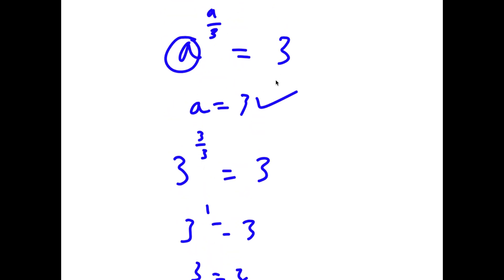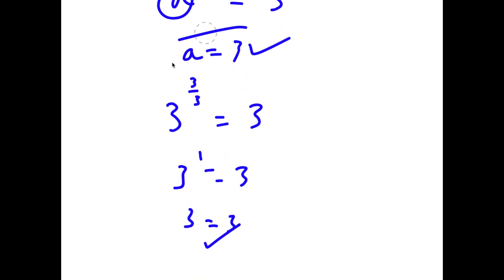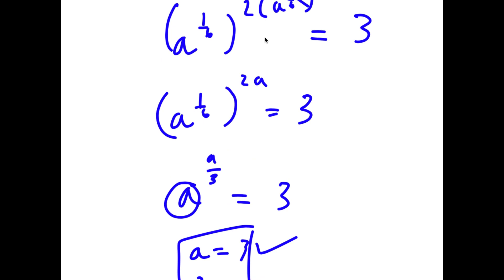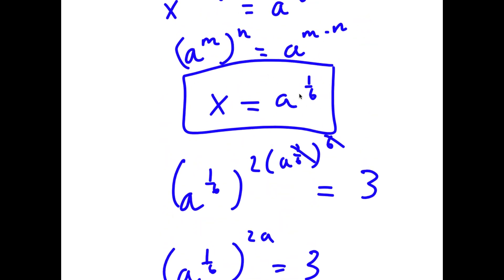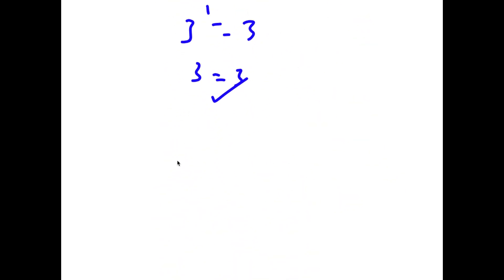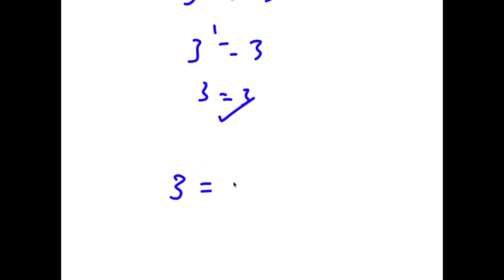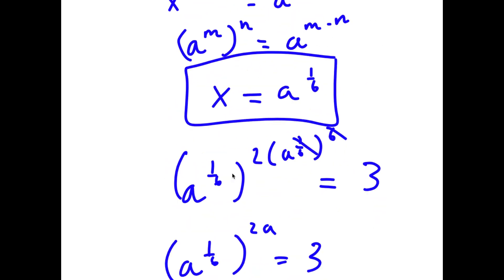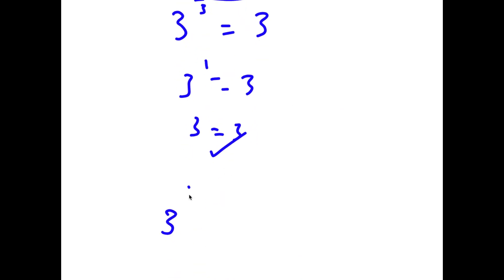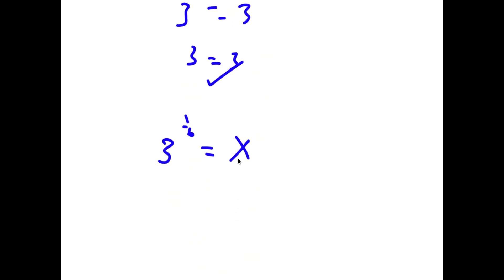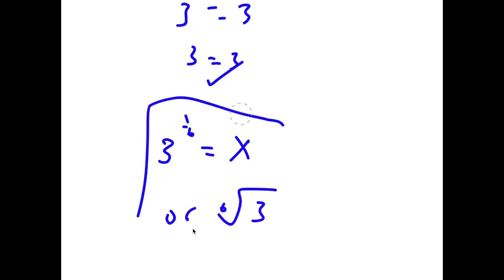We had to solve that by slightly guessing, but we got our solution of a equals 3. So if a equals 3, remember how we set x equal to a to the power of 1 over 6. This means that 3 to the power of 1 over 6 is equal to x. So 3 to the power of 1 over 6, or also in the form the 6th root of 3, this is my value of x.